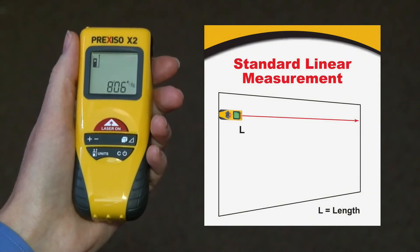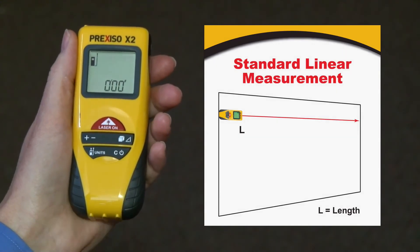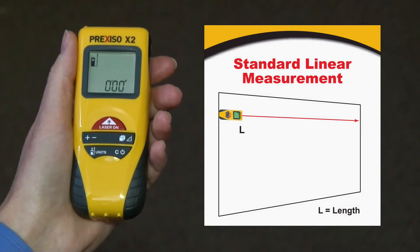To clear the unit press the C clear button and you're ready to go. So that's a quick example of using the direct laser measurement feature.